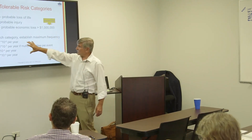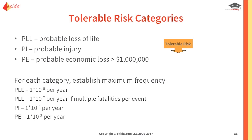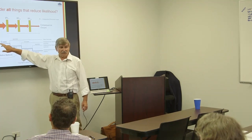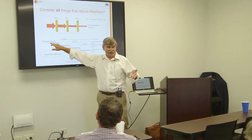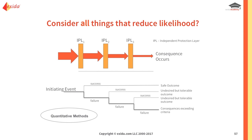Metrics used are probable loss of life, probable injury, probable economic loss greater than a million, or whatever the tolerable risk criteria is. For each category you establish a maximum frequency — a common method. Sometimes if multiple fatalities can occur, the frequency is lowered. You get the frequency of the initiating event, then for each protection layer ask: will it work or will it fail? If they all fail, we get consequences exceeding the criteria. The safe outcome is when one of the layers works.